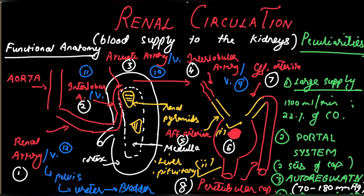To sum up: the kidneys have a large blood supply of 1100 ml per minute or 22 percent of cardiac output; it is a portal system with two sets of capillaries — the glomerular and peritubular capillaries; it is auto-regulated; and sodium consumption drives blood flow. Good day to all of you. I am Dr. Swapnil — please subscribe to my channel and share the video.